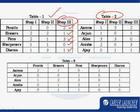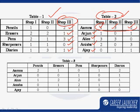The second table shows that Amna purchased one article from Shop 1, three articles from Shop 2, and two articles from Shop 3. This is true for Arjun, Alish, Anisha, and Ajay as shown in Table 2. Table 3 talks about which of the five children purchased how many articles of each type. For example, Amna purchased a total of six articles: two pencils, one eraser, one sharpener, and two diaries.